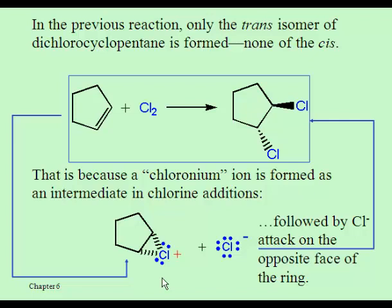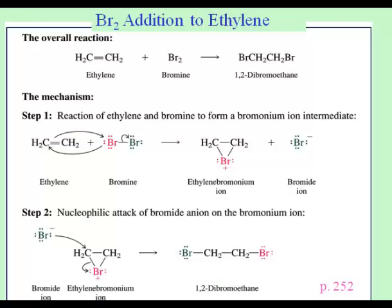There are other ways of making the cis isomer, but you wouldn't make them in the reaction we're talking about here. Your book shows this on page 252, using ethylene as the example, and it shows the complete mechanism for adding Br2 across the double bond. Again, we get a bromonium ion instead of a chloronium ion.